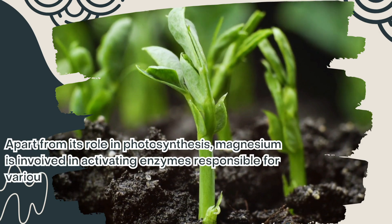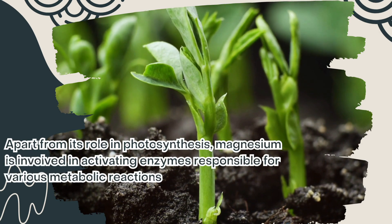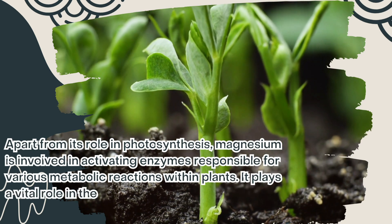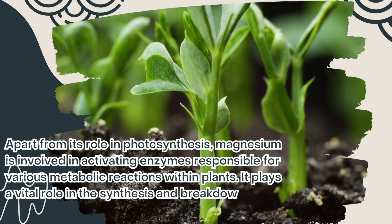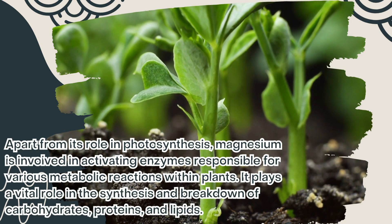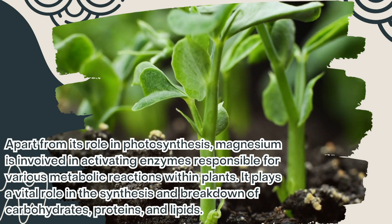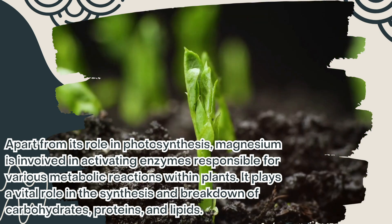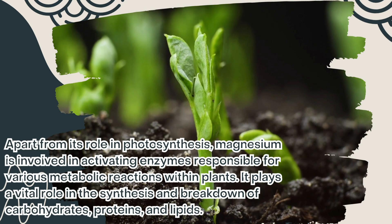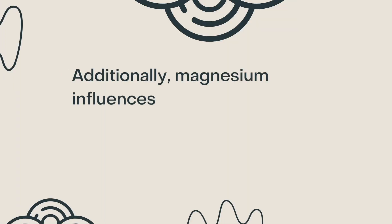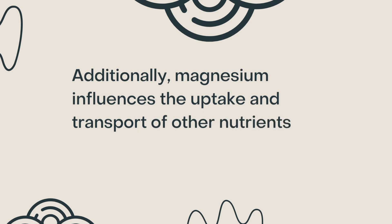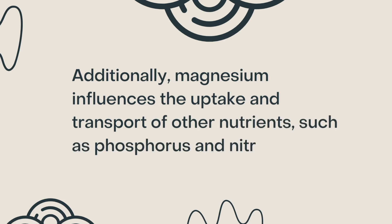Apart from its role in photosynthesis, magnesium is involved in activating enzymes responsible for various metabolic reactions within plants. It plays a vital role in the synthesis and breakdown of carbohydrates, proteins, and lipids. Additionally, magnesium influences the uptake and transport of other nutrients, such as phosphorus and nitrogen.